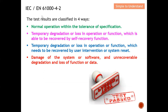The test results can be classified into four categories. Category one: normal operation within tolerance — the EUT operates normally through all positive and negative discharges, meaning all tests are compliant. Category two: temporary degradation or loss of function that is able to recover by a self-recovery function — for example, the EUT resets itself automatically and restores functionality.